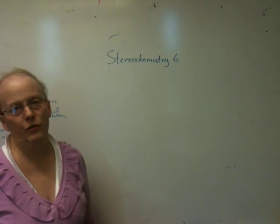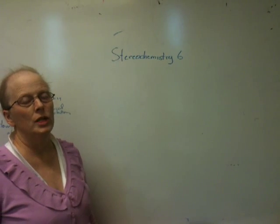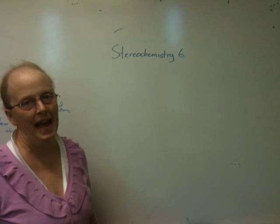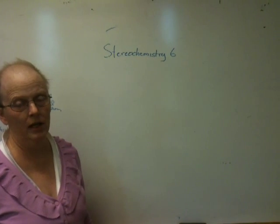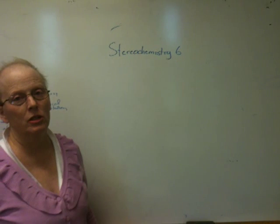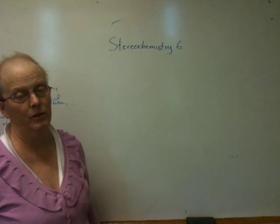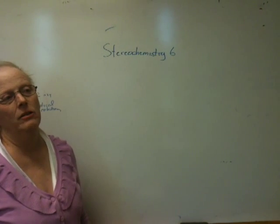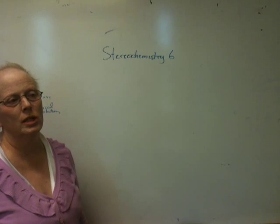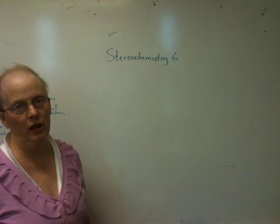In Stereochemistry 5, we looked at two stereocenters using what I would call a wedge and hash type drawing. In Stereochemistry 6, we're going to deal with a different situation with two stereocenters. To give you a little more flexibility, I'm going to use what is called a Fischer projection.